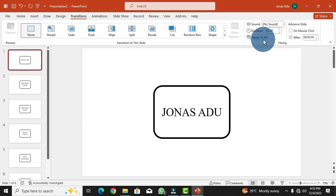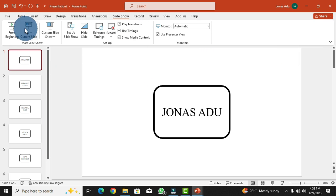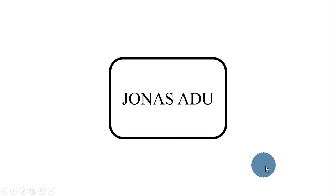To apply the timing settings to all slides, click the Apply to All option. All the settings and configurations needed to make this random picker work are now done. Go to Slideshow and choose From Beginning to view the presentation in slideshow mode and see if it works.